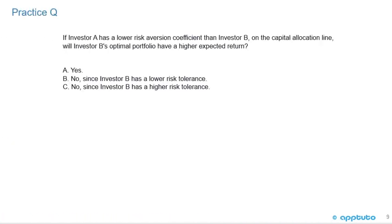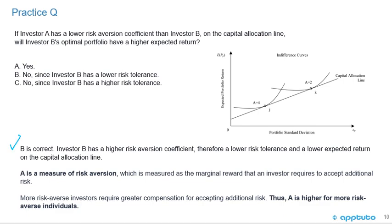Practice question 2: If investor A has a lower risk aversion coefficient than investor B on the capital allocation line, will investor B's optimal portfolio have a higher expected return? A) Yes. B) No, since investor B has a lower risk tolerance. C) No, since investor B has a higher risk tolerance. The correct answer is B. Investor B has a higher risk aversion coefficient, therefore a lower risk tolerance and a lower expected return on the capital allocation line. A is higher for more risk-averse investors.